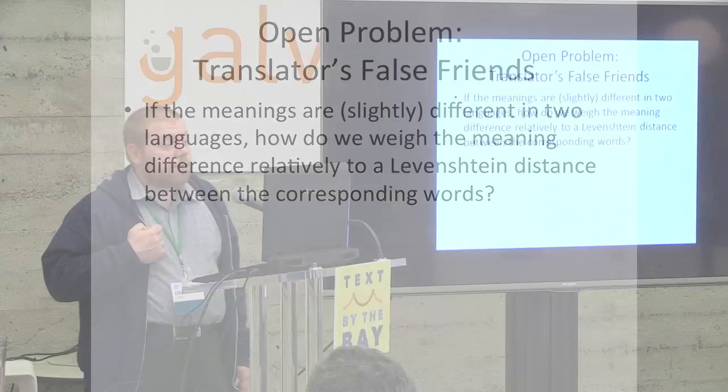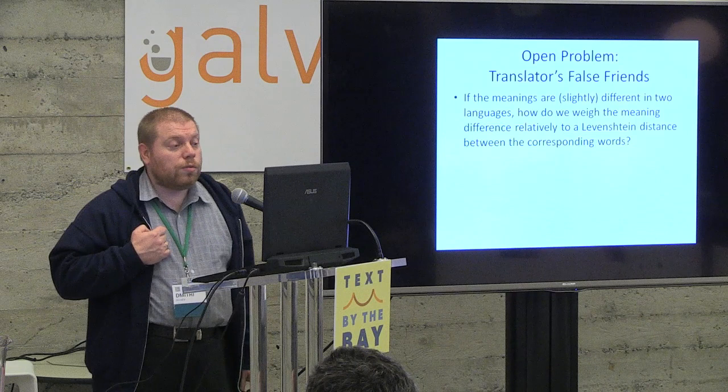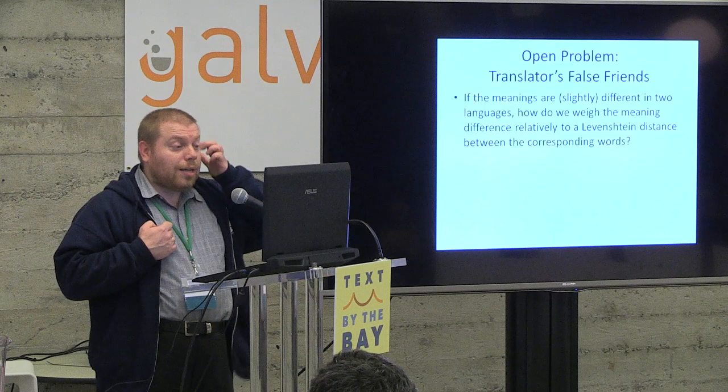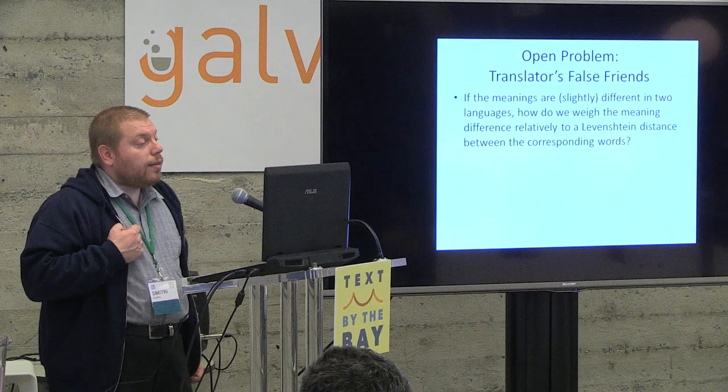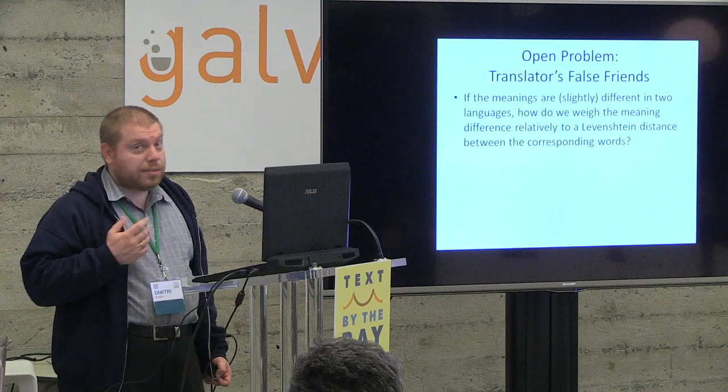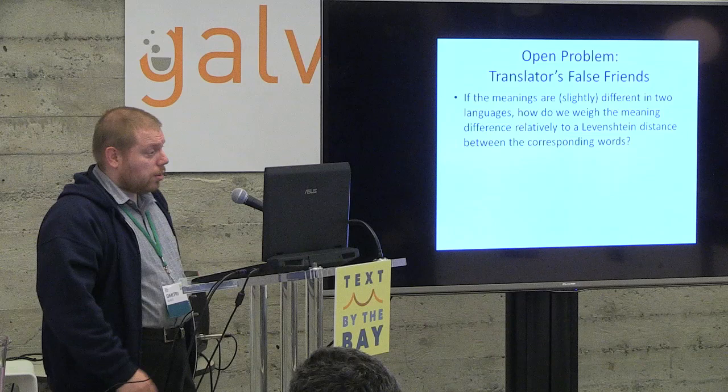There are some remaining problems with this approach. One is translator's false friends: if the meaning changed a little bit, like for English 'two' versus Russian 'do,' the cognates are there but the meaning changed — it's actually closer to 'do' in some other Slavic languages than to the English meaning of 'two.' The question is how we weigh the difference in meanings versus a Levenshtein distance that we can mathematically compute between the spellings of the corresponding words.